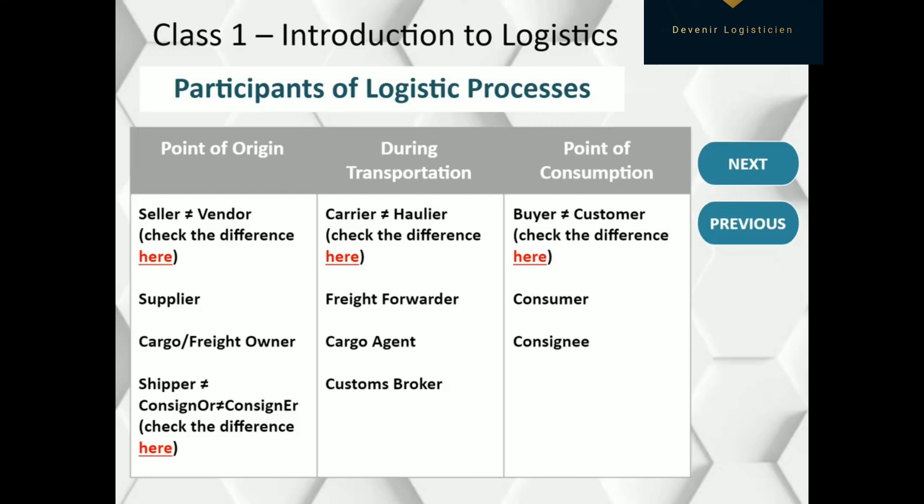The first column presents people who are somehow connected with selling the cargo at the point of origin and sending it to a client. The second column is about people who are involved in transportation itself, and the third one represents those who receive the cargo.